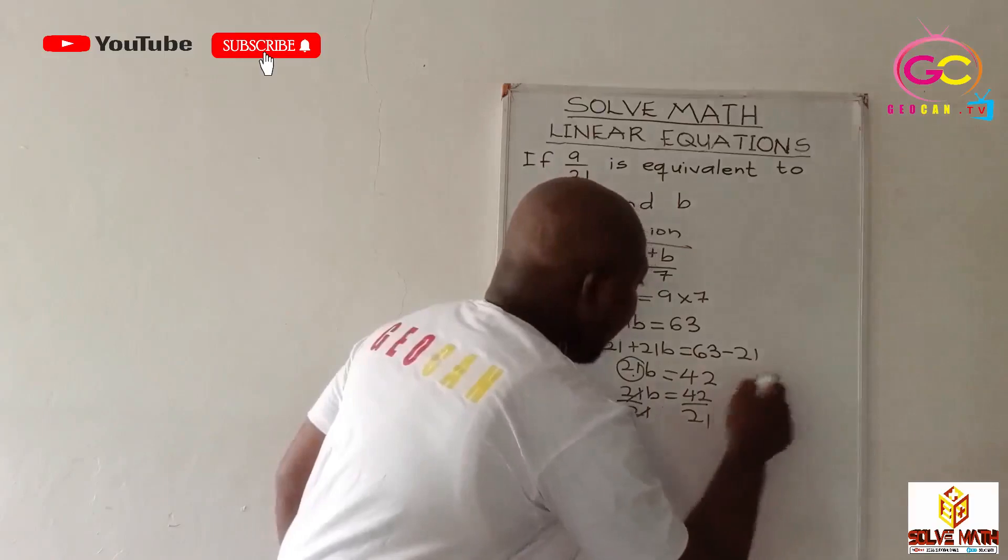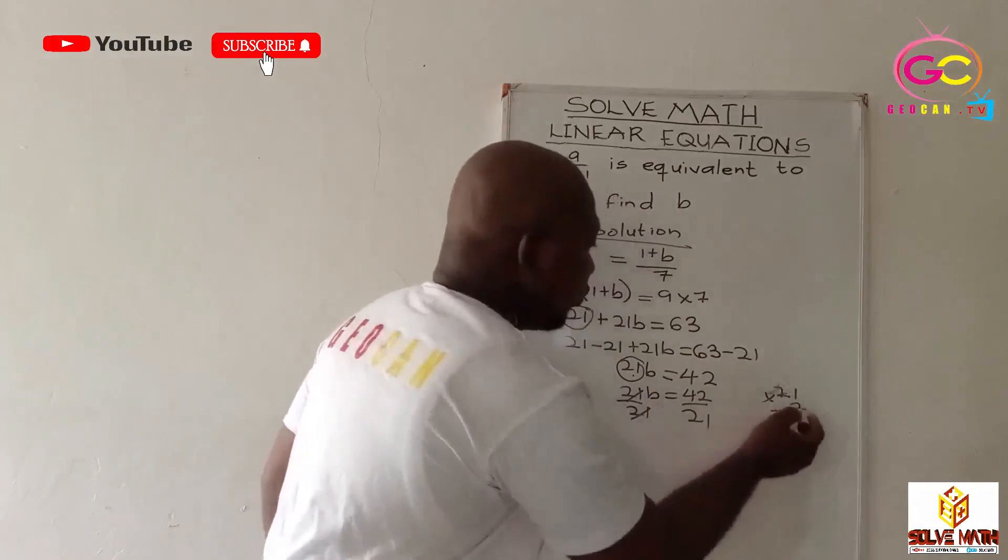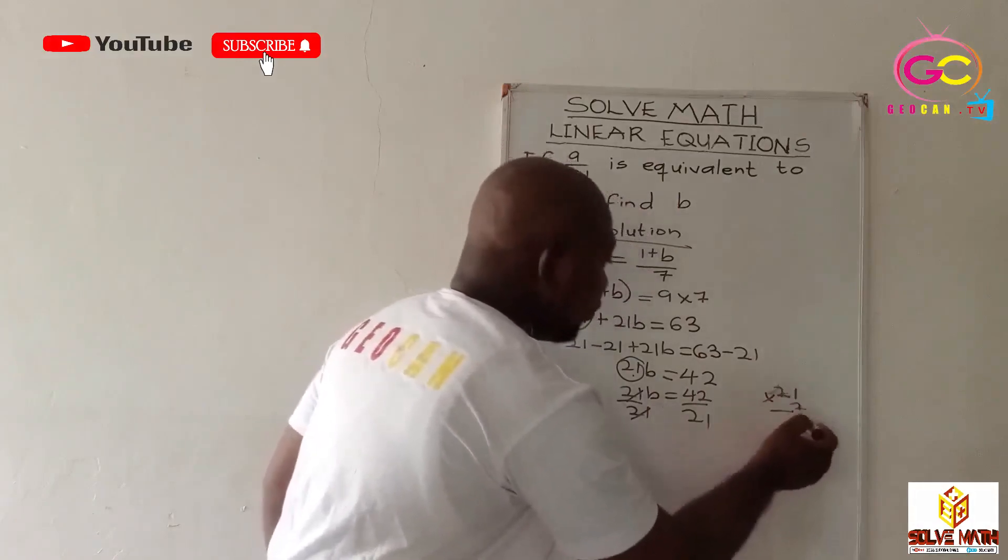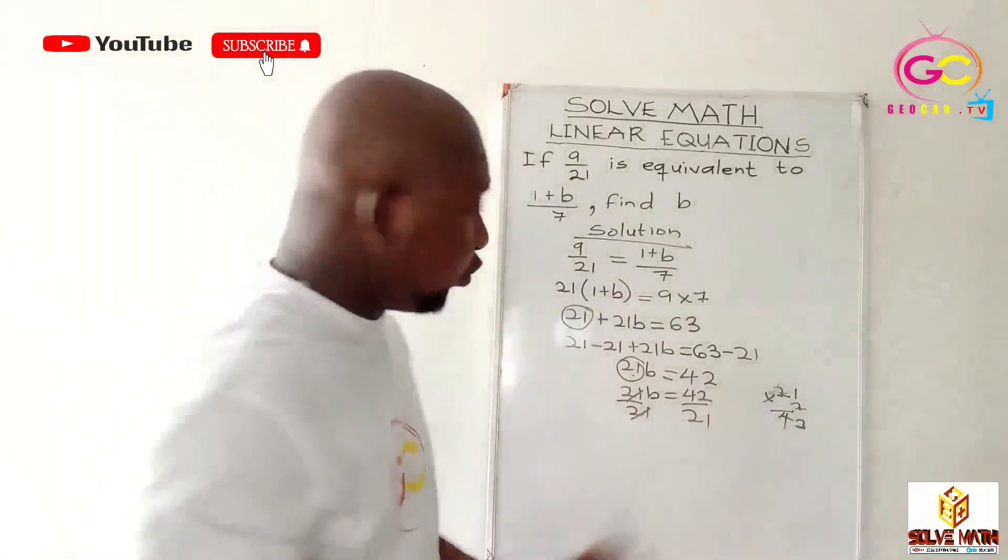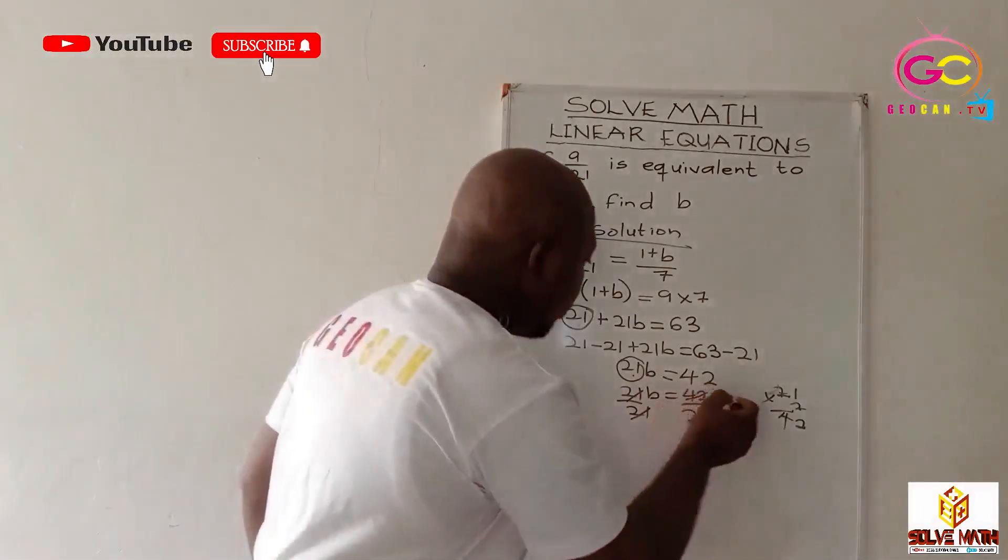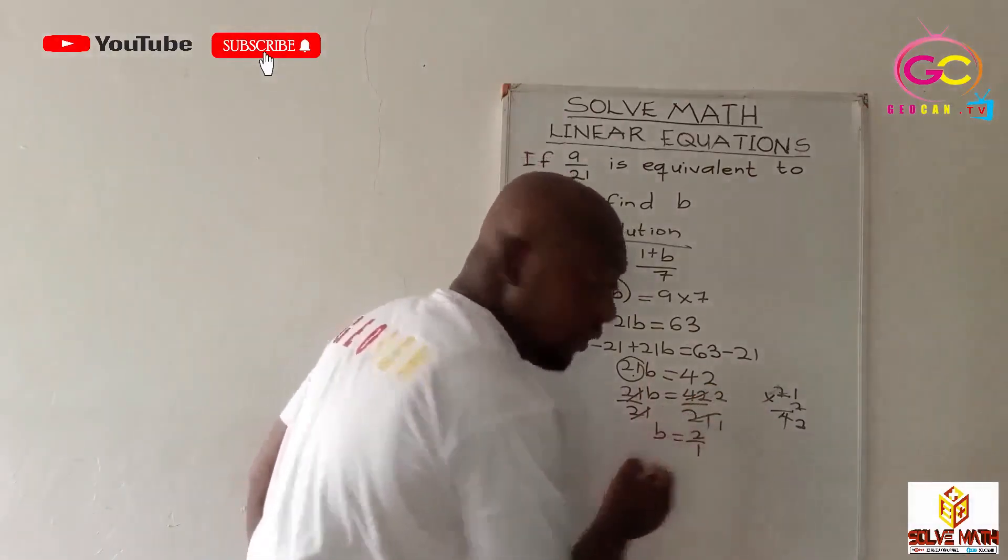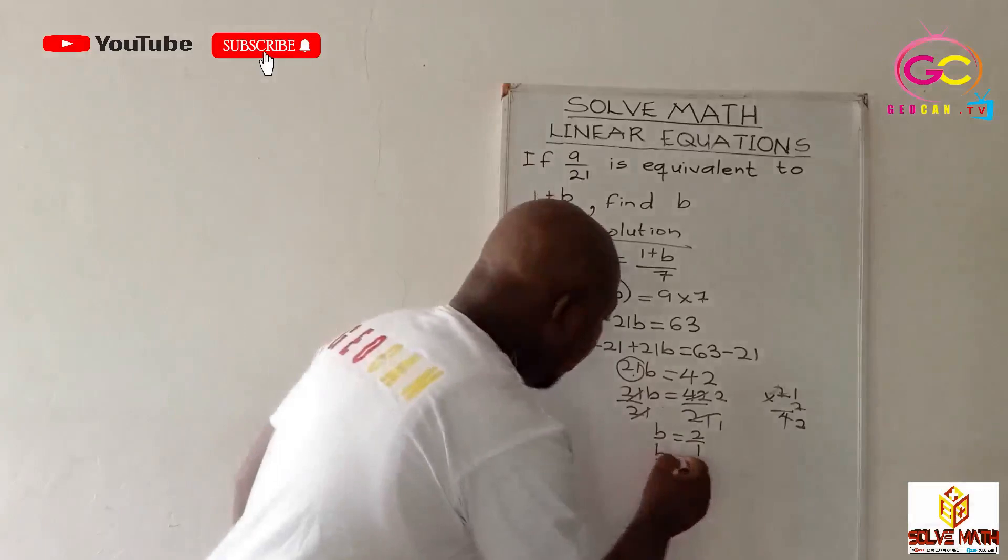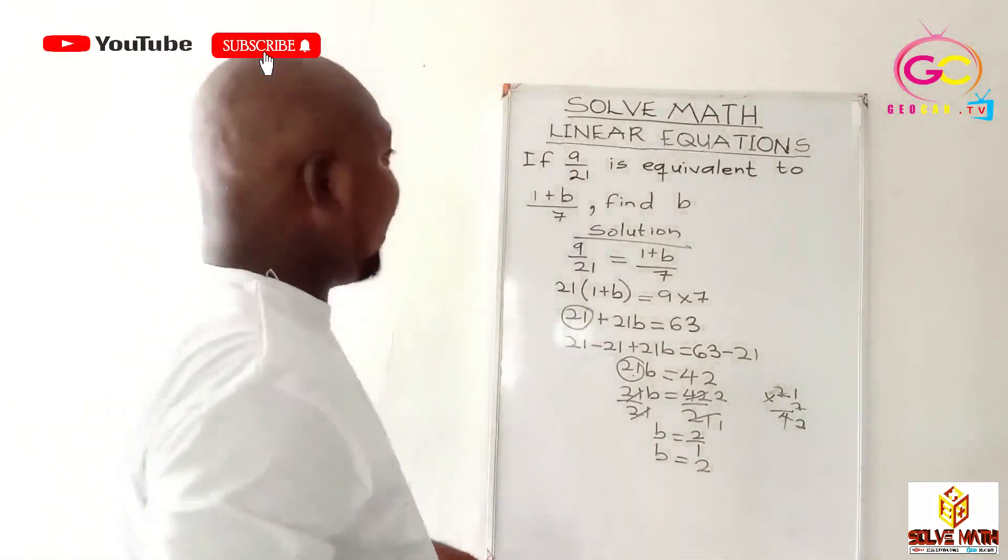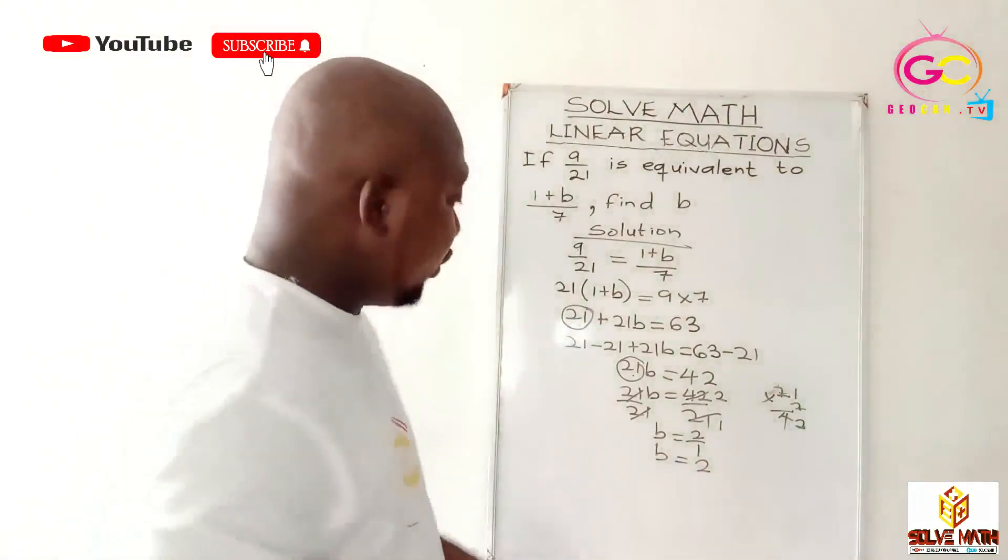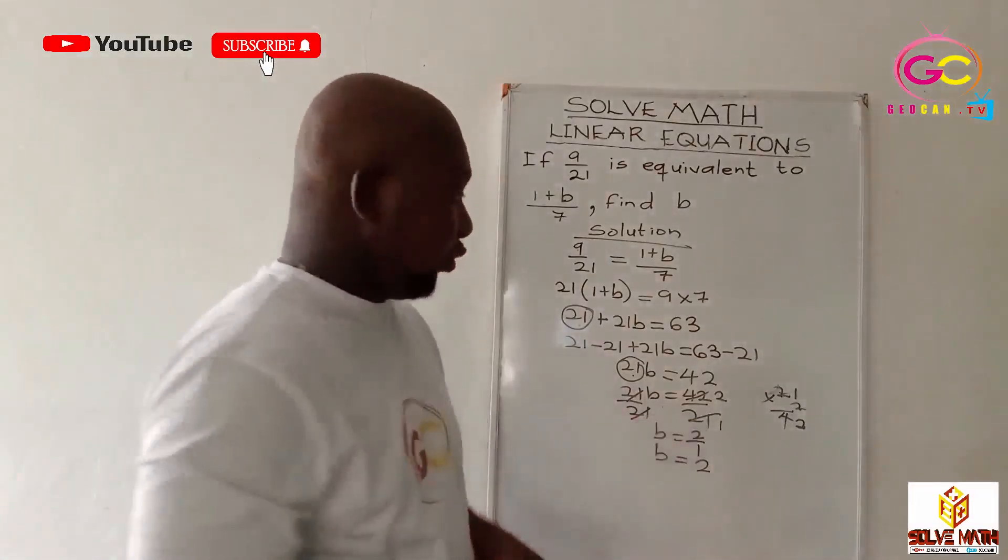Okay. We can do that. 21 times 2. Now 2 times 1 is 2, 2 times 2 is 4. So it means 21 will go into 42 twice, right? So it will cancel 2. 21 will go into itself once. So B will be equal to 2 over 1, right? So B will be equal to 2. Easy as A, B, C, D. So it means B is equal to 2.